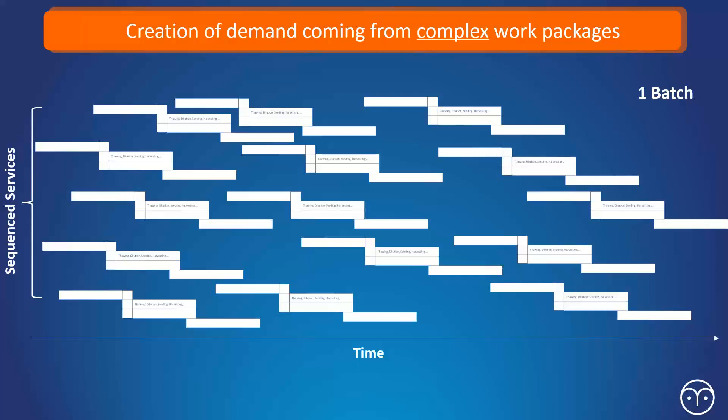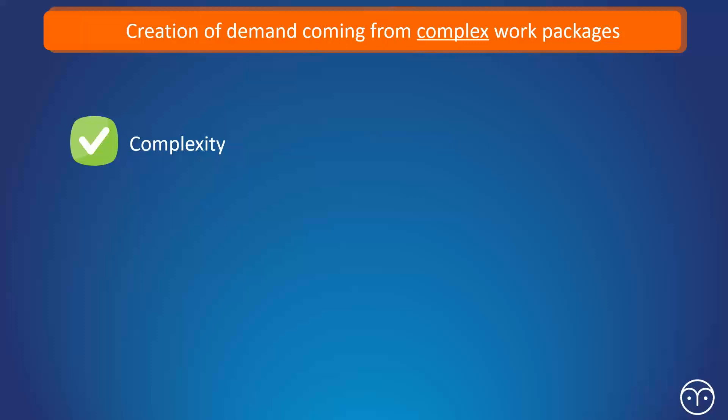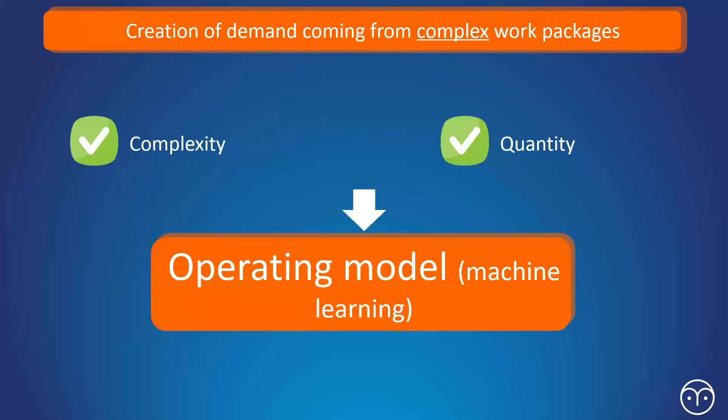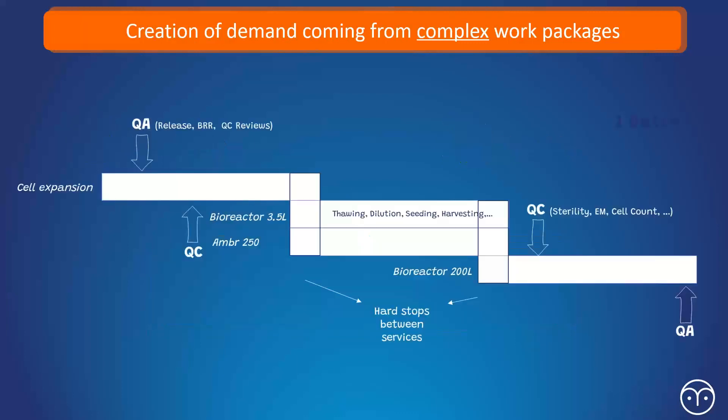And these complexities essentially are drivers for losses and productivity. And by having basically a digital system, it offers the opportunity to handle all these complexities. And it also can handle the quantity of data that's coming into it. And essentially this is done by by an operating model, which is based on a machine learning system. So that machine learning system is then driving how these things are scheduled out. And it's learning on an ongoing basis.